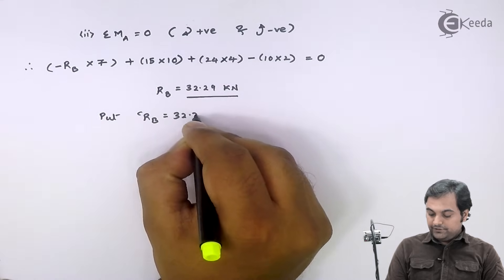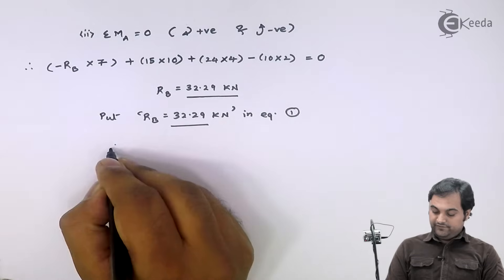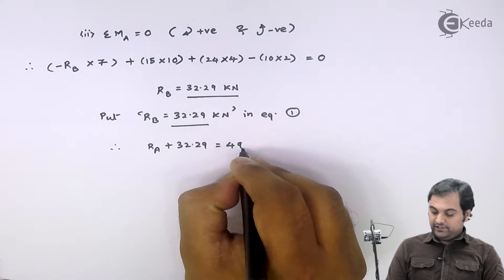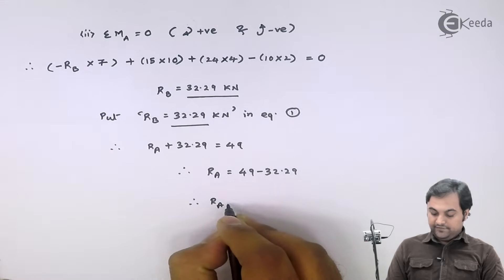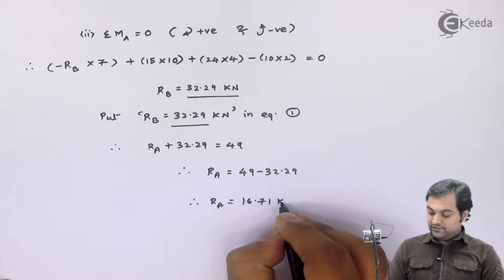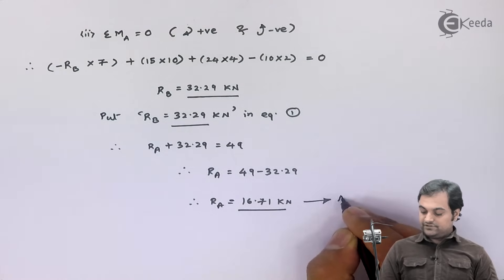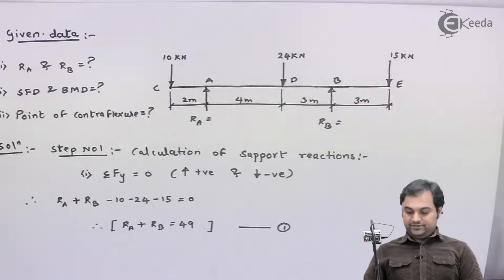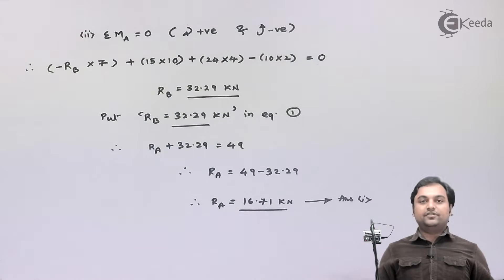Substituting RB equals 32.29 kilo Newton into equation 1: RA plus 32.29 equals 49, therefore RA equals 49 minus 32.29, which gives RA equal to 16.71 kilo Newton. So the support reactions are RA = 16.71 kilo Newton and RB = 32.29 kilo Newton. This completes the first part. Now I will proceed to shear force calculations.